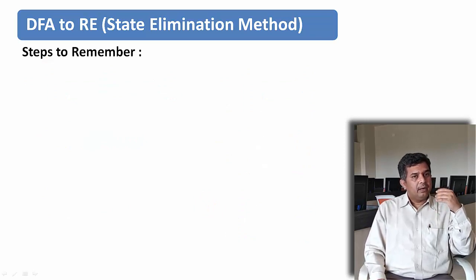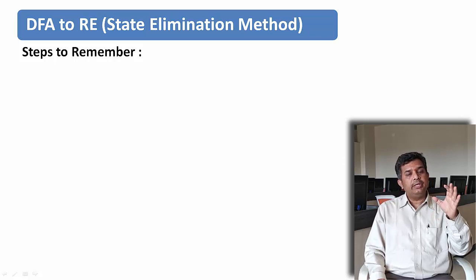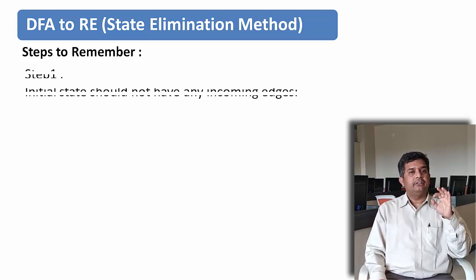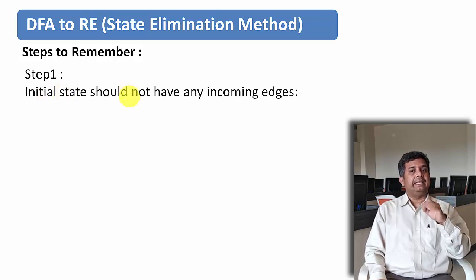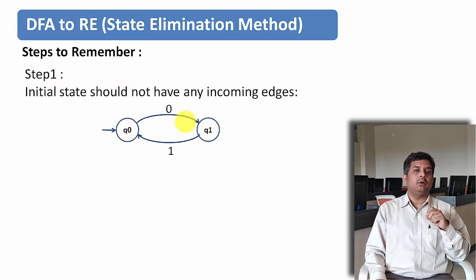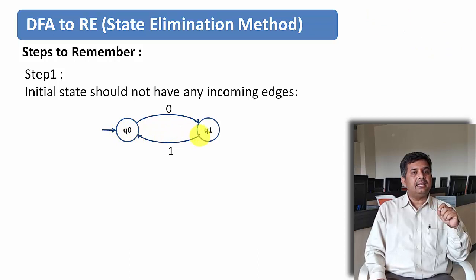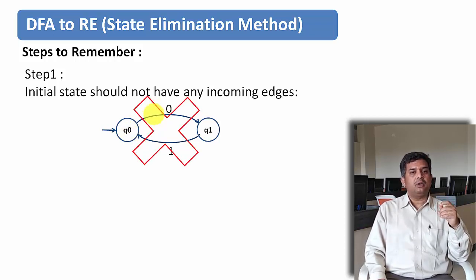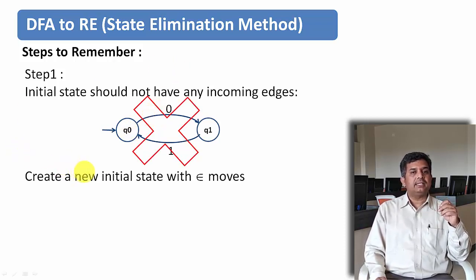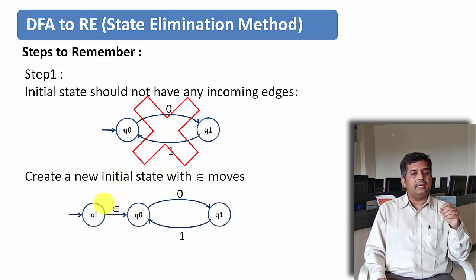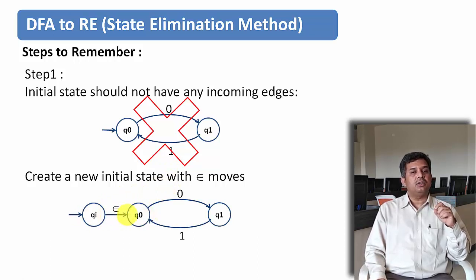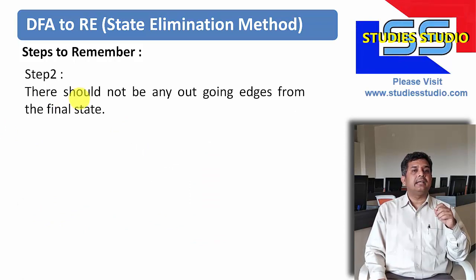While using state elimination methods we need to remember some steps. The first step is the initial state should not have any incoming edge. If such a finite automata is there and Q0 is the initial state and we can see that there is an incoming edge to the initial state, we should avoid that. Instead, we will create one more initial state with an epsilon transition. Let us say qi is the new initial state; from qi to q0 we take an epsilon transition and carry forward our problem solving.